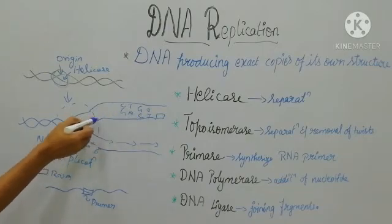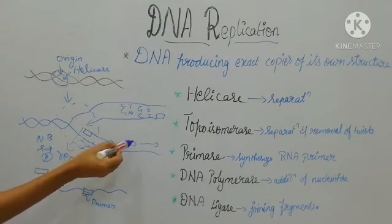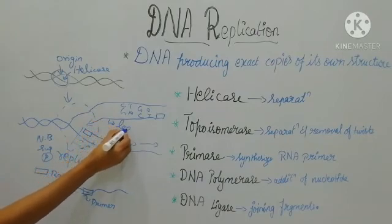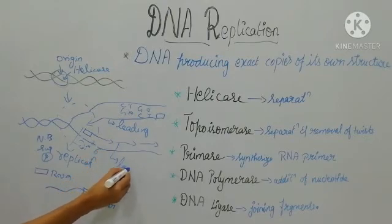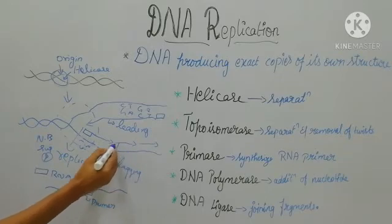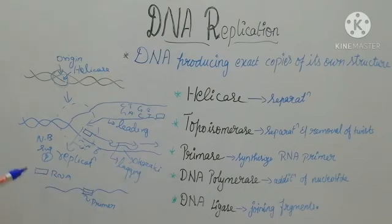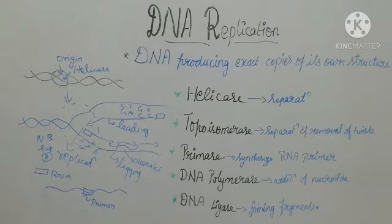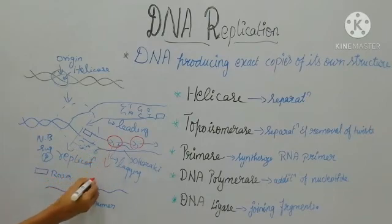Of the two new strands, one strand is formed continuously and the other is discontinuous — formed as segments of DNA. The continuous strand is called the leading strand, and the discontinuous strand is called the lagging strand. The pieces of DNA on the lagging strand are called Okazaki fragments. The last enzyme, DNA ligase, comes in and joins these discontinuous segments, filling the gaps.